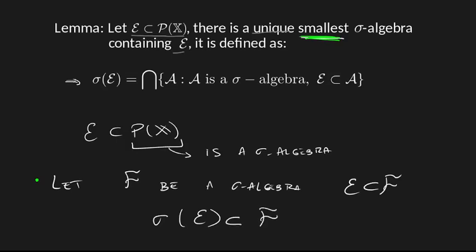And this is actually very easy to check because if F is a sigma algebra that contains E, then F is in this intersection. So we are intersecting F with many other sigma algebras. And so sigma of E, this intersection, has to be contained in F. So this is obviously the smallest sigma algebra possible that will contain E.